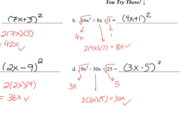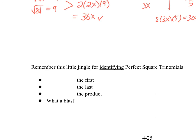To summarize — perfect square trinomials: square root the first, square root the last, double the product. That's it. Don't confuse perfect square trinomials with difference of squares — a common mistake. A trinomial is three terms and produces a bracket squared. Difference of squares gives two brackets, one addition and one subtraction, because the middle terms cancel out, leaving only two terms.